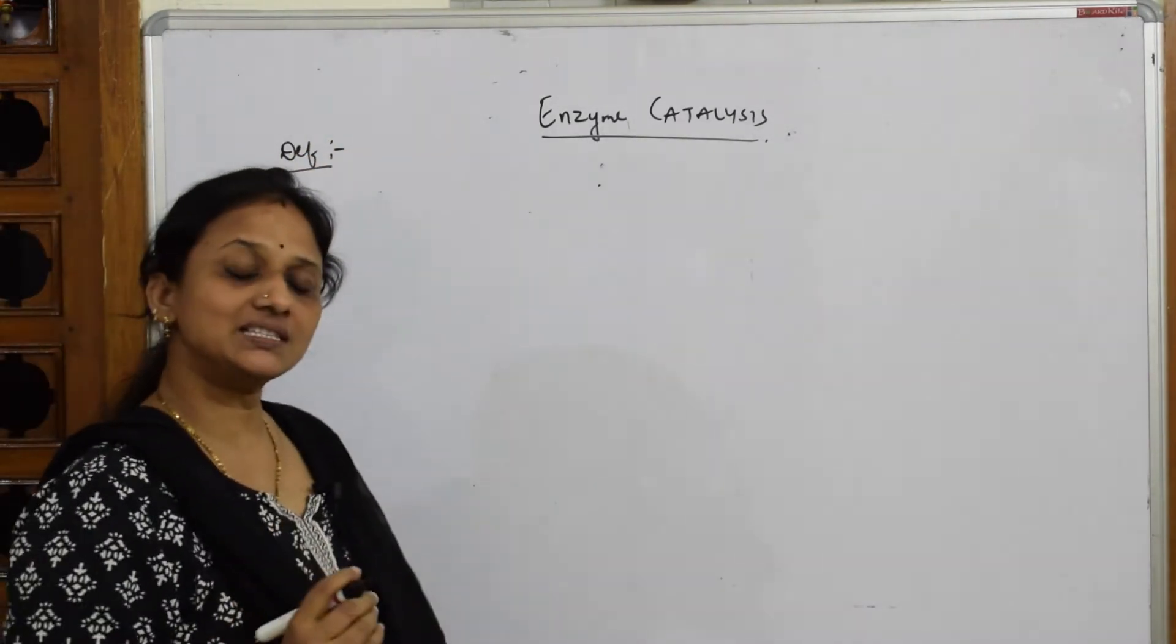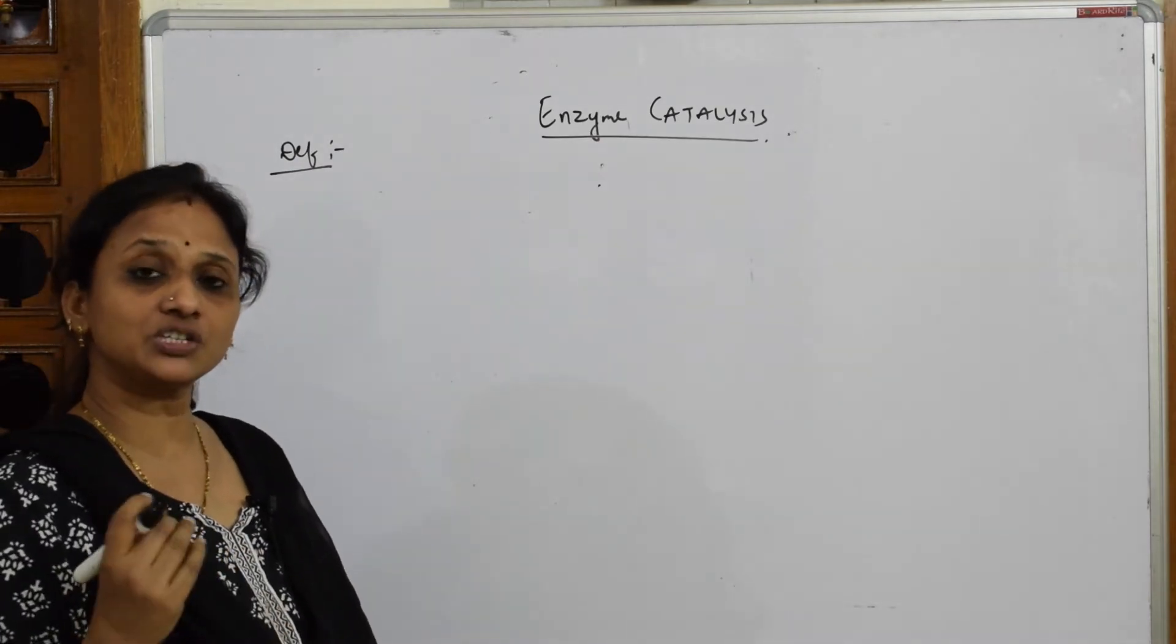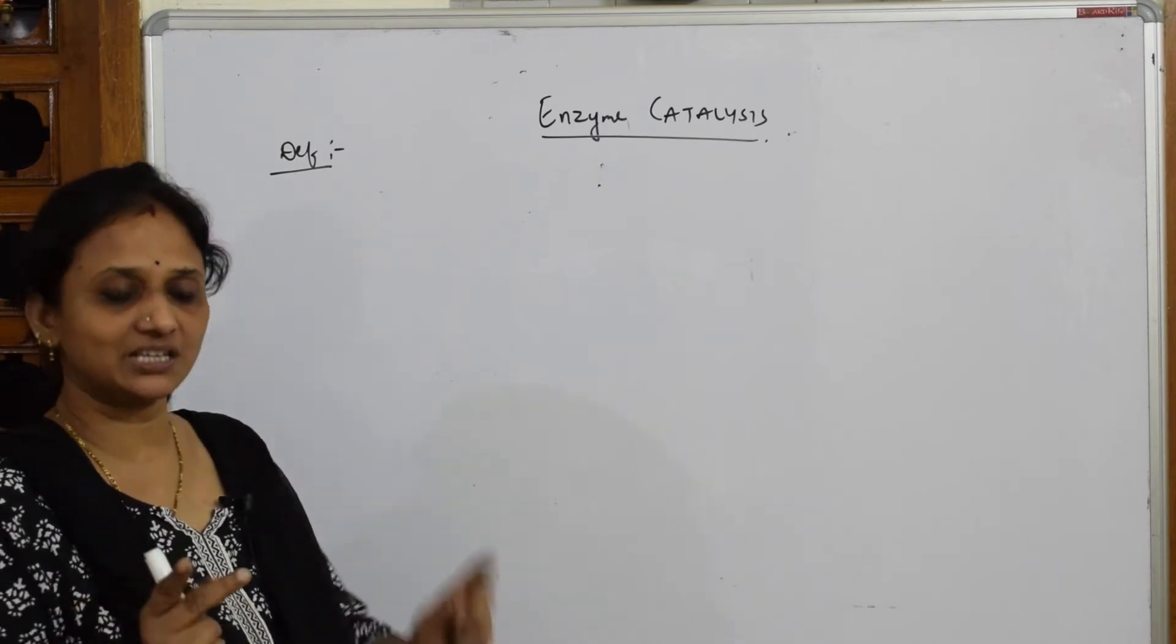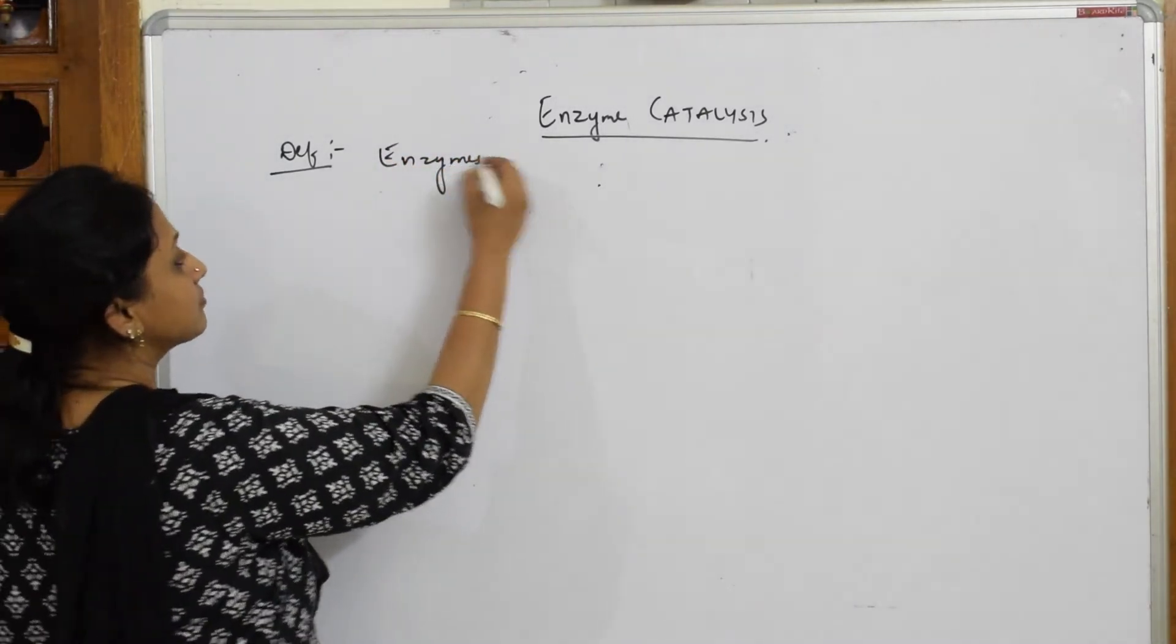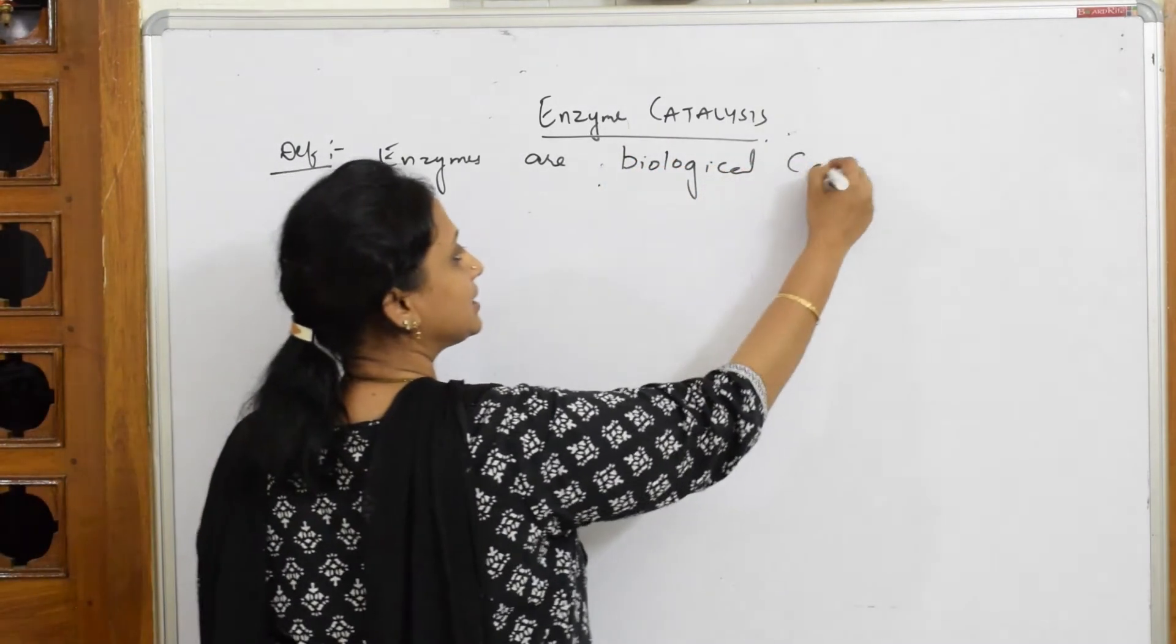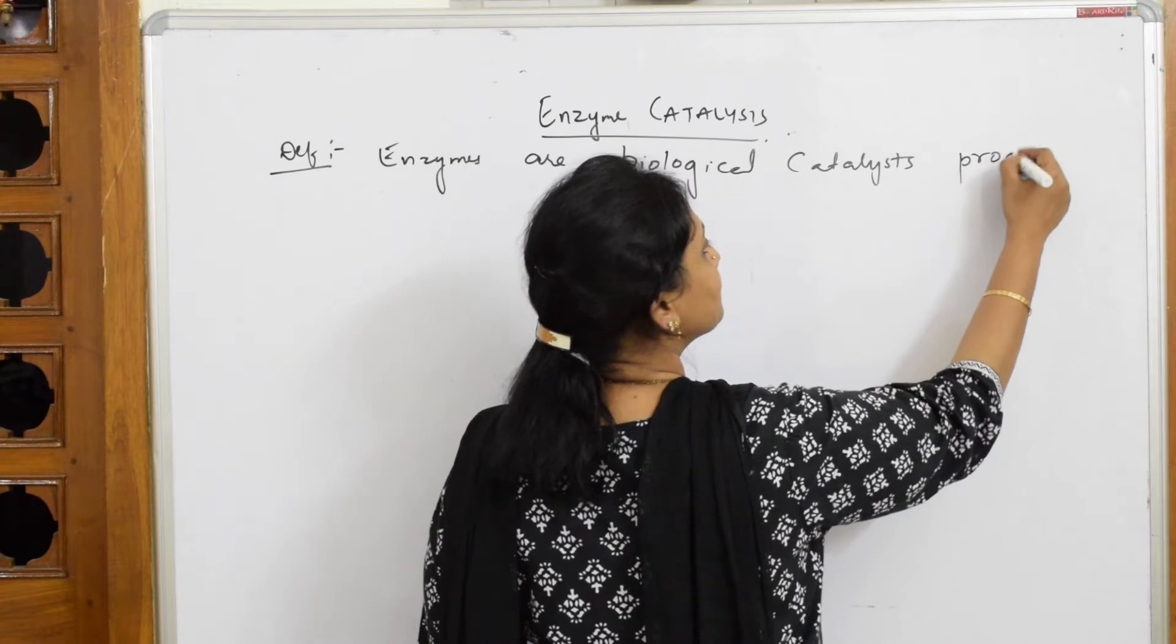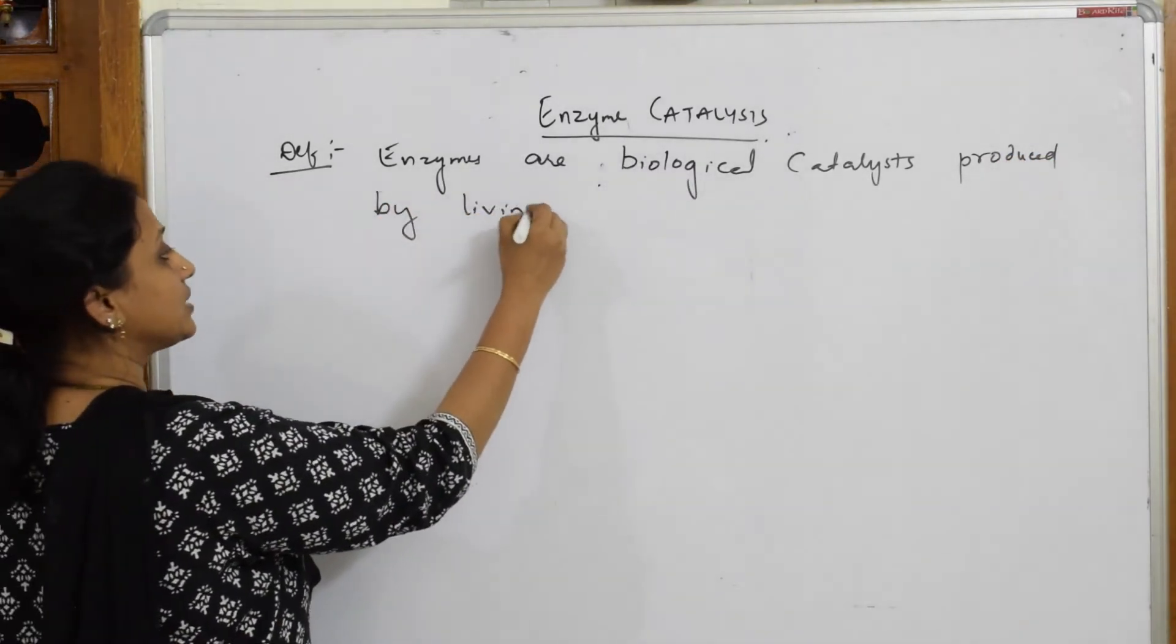So I'll start like this. Enzymes are produced or they are biological catalysts. First important thing is that. So enzymes are biological catalysts, when I say that means they are produced by living organisms. So let us add all these words and write. Enzymes are biological catalysts. So when I say this word, that means they are produced by living organisms.